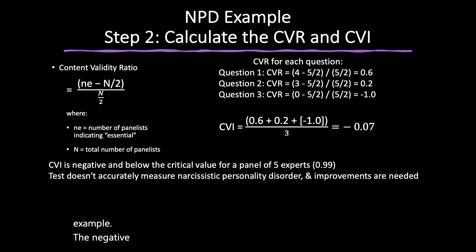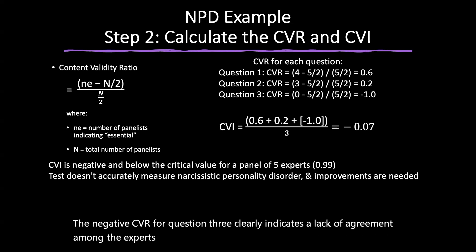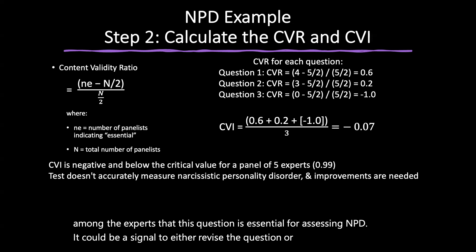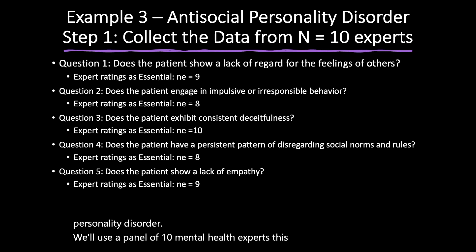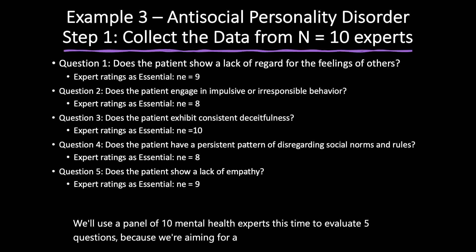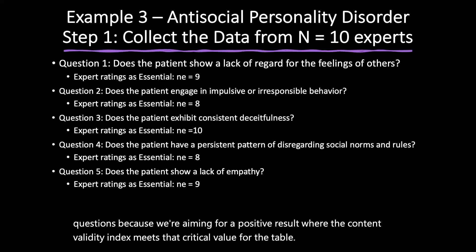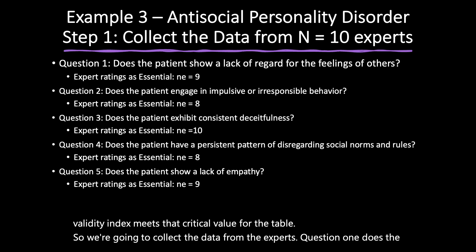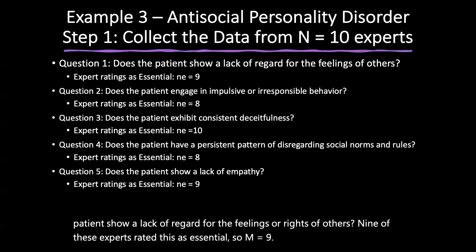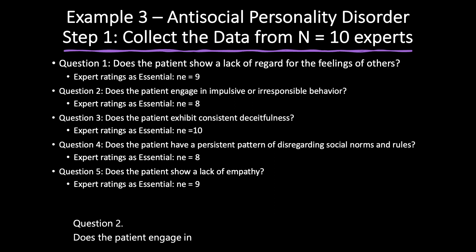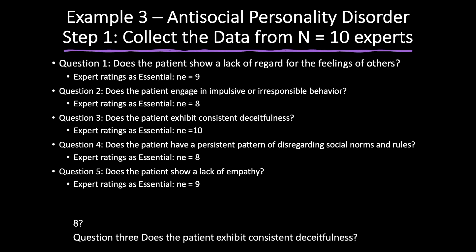For example, suppose a researcher is evaluating a new diagnostic tool to detect early symptoms of schizophrenia. The researcher might compare this tool's results with a well-established clinical diagnosis method. A high correlation between the new tool and the established method demonstrates concurrent validity. For predictive validity, a clinician might use a specific assessment to predict how a patient with schizophrenia will respond to a particular treatment regimen — if the assessment correctly predicts the patient's response over time, it demonstrates predictive validity.